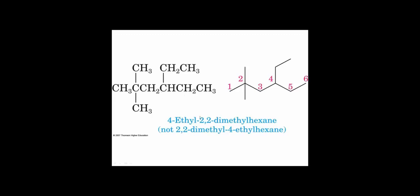So the substituents are at the two and four positions rather than three and five. The name is 4-ethyl-2,2-dimethylhexane. The ethyl comes before dimethyl in the name because when alphabetizing substituents we ignore the multiplying prefixes like 'di' and 'tri' — so we compare 'ethyl' (E) against 'methyl' (M), and E comes before M.